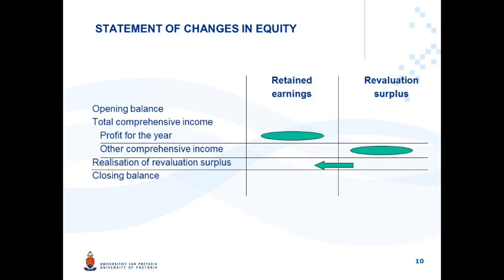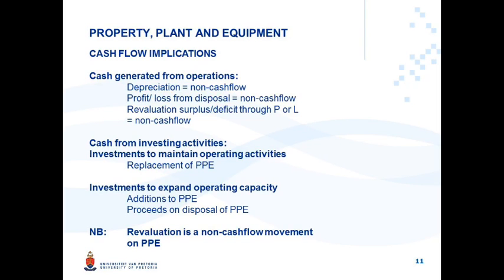Profit for the year affects retained earnings. In the Statement of Cash Flows, the sections affected through Property, Plant and Equipment include cash generated from operations. Depreciation, profit or loss from disposal, and revaluation surplus and deficits through profit or loss are all non-cash flow items. In Cash from Investing Activities, investments to maintain operating activities include replacement of PPE, investments to expand operating capacity include additions to PPE, and proceeds on disposal of PPE.